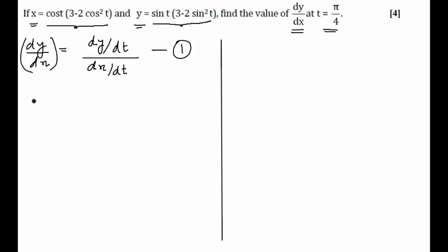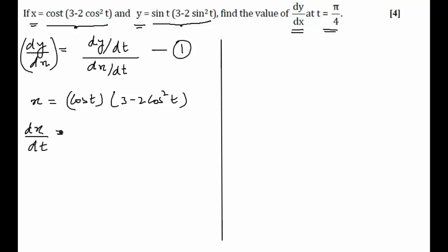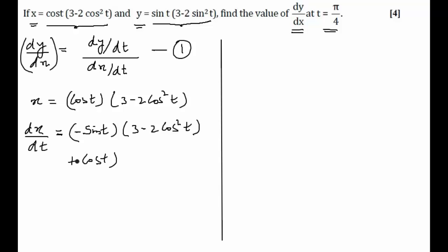Let us start with the value of x. Since x is equal to cos(t) times (3 minus 2cos(t)), from this expression I will get dx/dt. When solving dx/dt, I will have to use the product rule. So first, differentiating cos(t) gives minus sin(t), so the expression becomes minus sin(t) into (3 minus 2cos(t)), plus I keep cos(t) as it is and differentiate the second bracket, which gives minus 2 into 2cos(t) into minus sin(t).